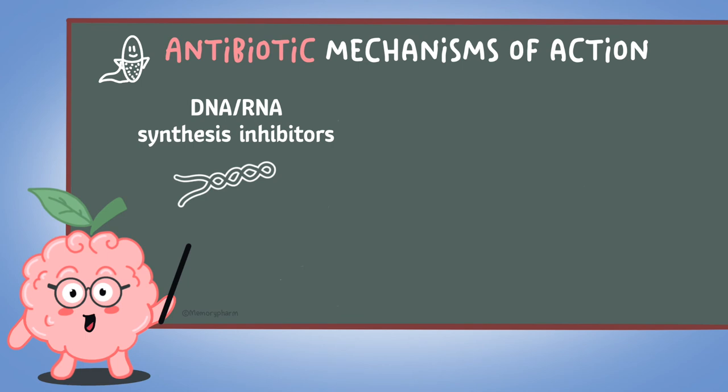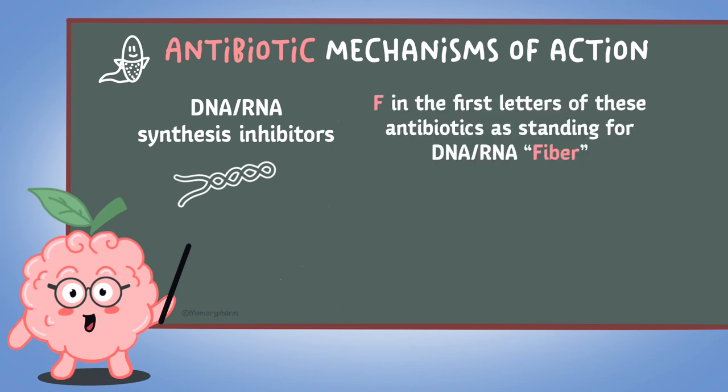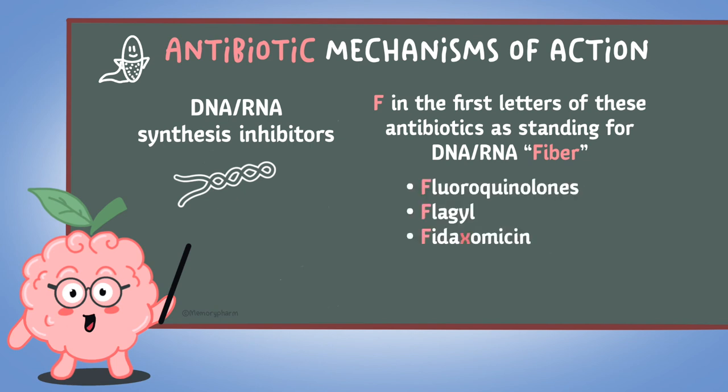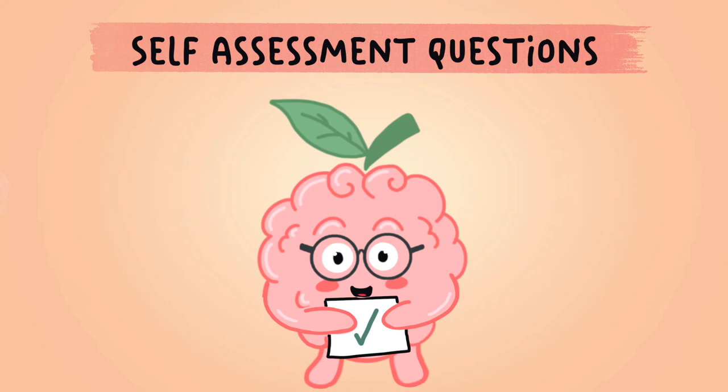For antibiotics that inhibit DNA and RNA synthesis, think of the F in the first letters of these antibiotics as standing for DNA-RNA fiber. The X in the middle of fidaxomycin also looks like a chromosome. I hope this helps you remember the antibiotics. Now let's do a self-assessment to test if you can remember the mechanism of action of these antibiotics.